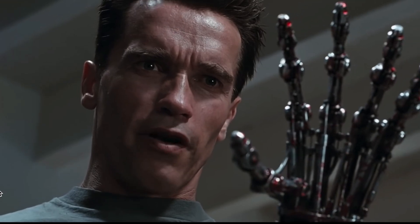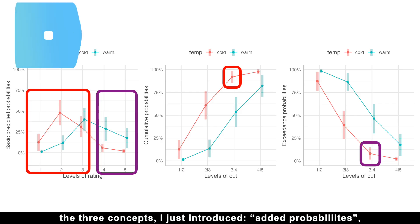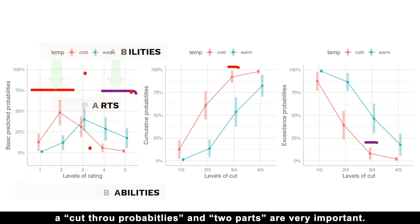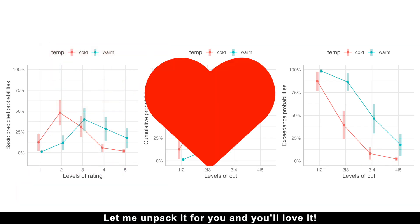Now listen to me very carefully. The three concepts I just introduced—added probabilities, cut-through probabilities, and two parts—are very important. Let me unpack it for you and you'll love it.